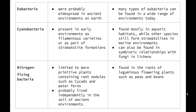Early nitrogen-fixing bacteria were therefore limited to more primitive plants containing root nodules such as cycads and water ferns. Other nitrogen-fixing bacteria, including some single-celled cyanobacteria, probably lived independently in the soil of ancient environments, and free-living nitrogen fixers such as these are still present in the soil today.